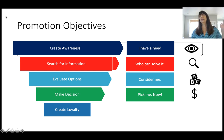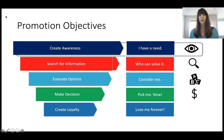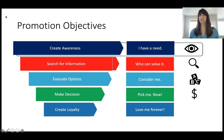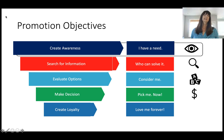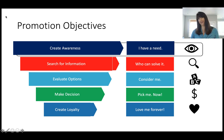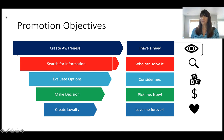Then finally, you picked me! Now what I want you to do is fall in love with me, just like a relationship. Once I've selected the vehicle from a particular company, I want you to keep coming back, be loyal, and spread your goodwill and love on social media. That is the last and final objective — to create loyalty. We do that by having your consumer fall in love with your brand, just like you would a person. Those are the five types of promotion objectives in the purchase journey.